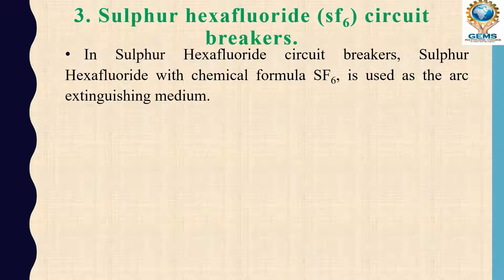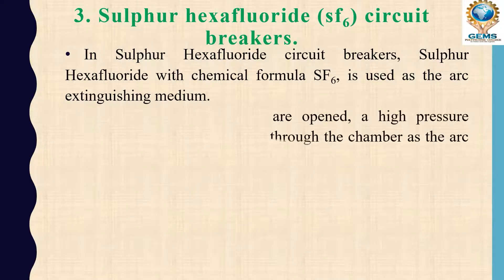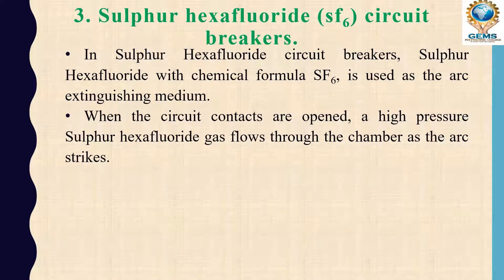As with an oil circuit breaker and air circuit breaker, in SF6 circuit breaker we use sulphur hexafluoride gas to extinguish the arc. This is the arc extinguishing, arc extinction principle. When the circuit contacts are opened, a high pressure sulphur hexafluoride gas flows through the chamber as the arc strikes.